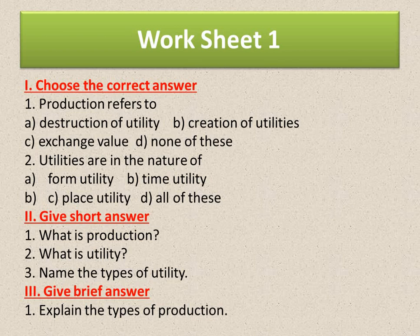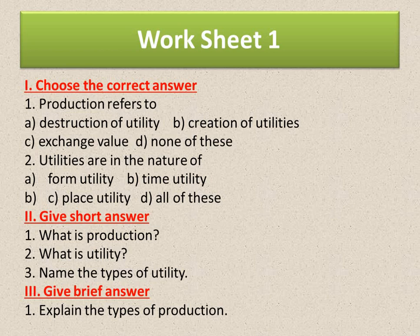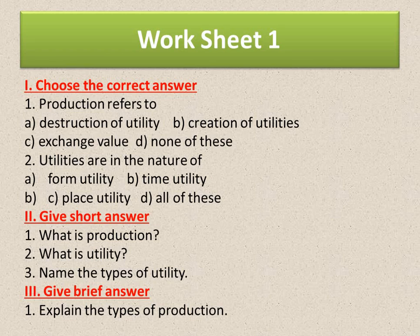Part 1 — Choose the correct answer: Production refers to (a) destruction of utility, (b) creation of utility, (c) exchange value, (d) none of these. Utilities are in the nature of (a) form utility, (b) time utility, (c) place utility, (d) all of these. Part 2 — Give short answers: (1) What is production? (2) What is utility? (3) Name the types of utility. Part 3 — Give brief answers: (1) Explain the types of production.